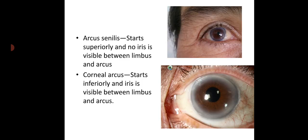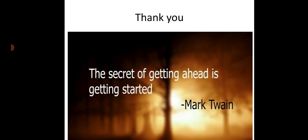Obesity is also a marker. Regarding arcus senilis versus corneal arcus: arcus senilis starts superiorly and no iris is visible between the limbus and arcus, whereas in corneal arcus it starts inferiorly and the iris is visible between the limbus and arcus. Thank you.